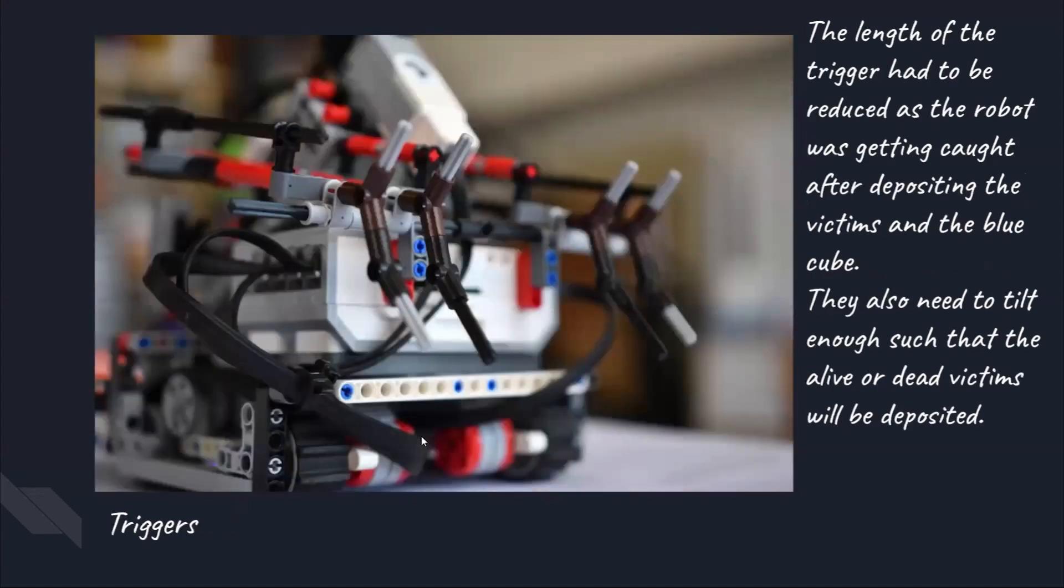Next, I will be talking about the triggers. These are a few of the considerations we had with the triggers. We had to make sure that the length of the trigger was 6cm or more, but at the same time, we had to make sure that the trigger was short enough so that we would not get caught when depositing the blue cube and the black and alive victims. Lastly, we made the trigger such that the alive or dead victims will slide down the storage channel.